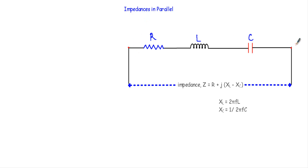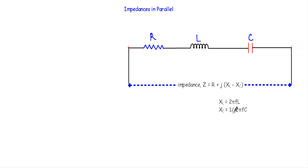Let's say we have two points, and between them we have a resistor R, inductance L, and capacitance C. The total opposition to current flow will be Z = R + jXL - XC, where R is resistance, XL is the inductive reactance, and XC is the capacitive reactance. XL = 2πfL and XC = 1/(2πfC).